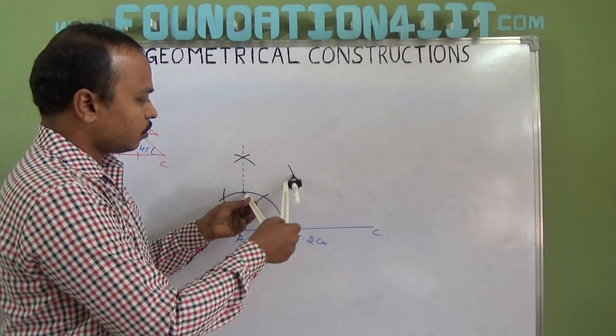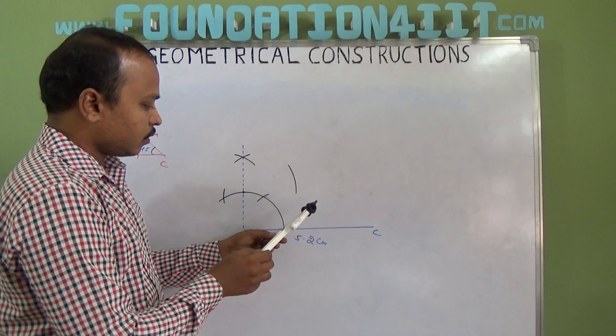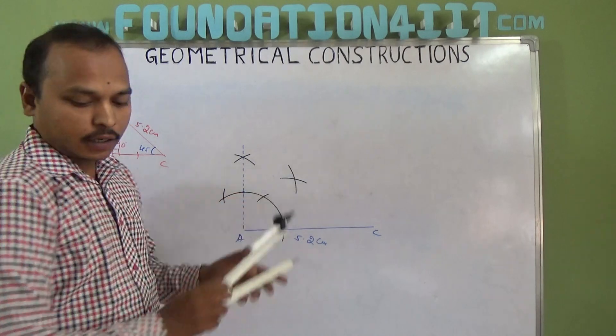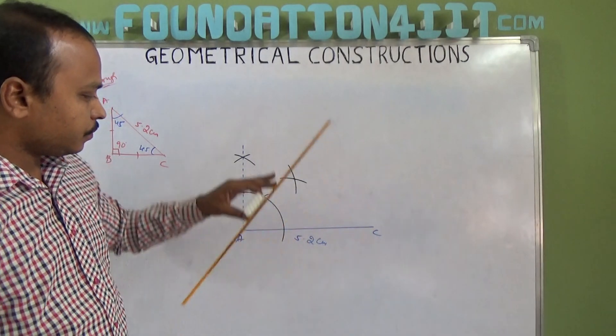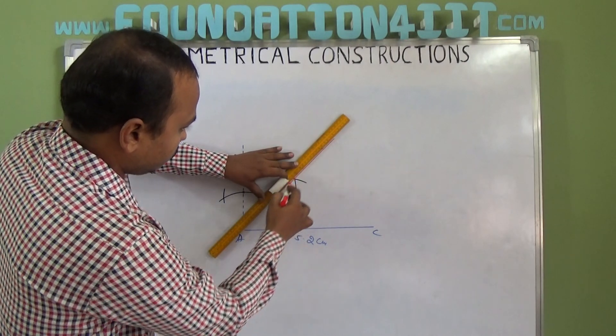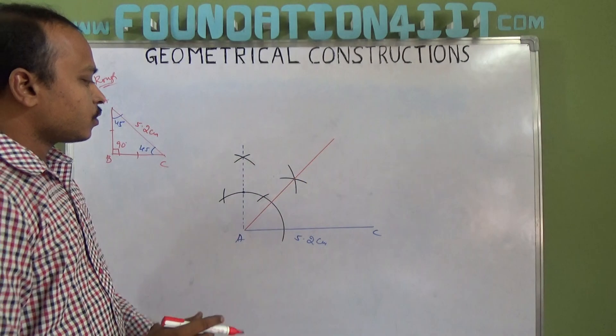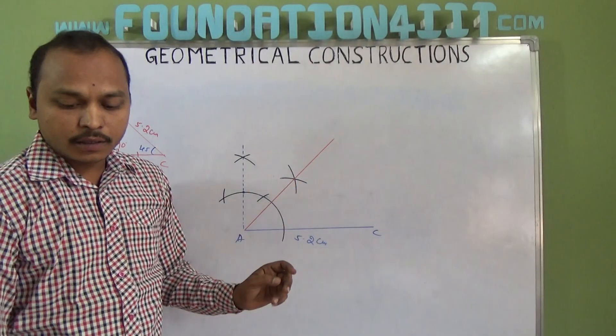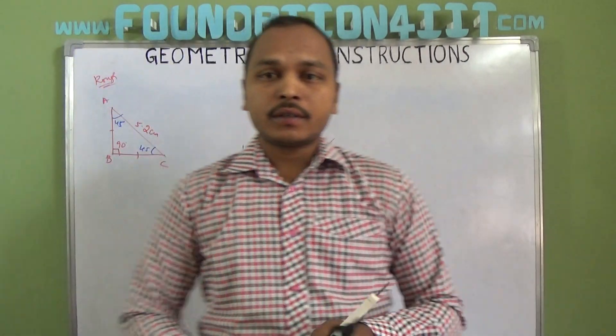Here also draw an arc. Now join this. So this is 45 degrees. Similarly you should do at the point C also.